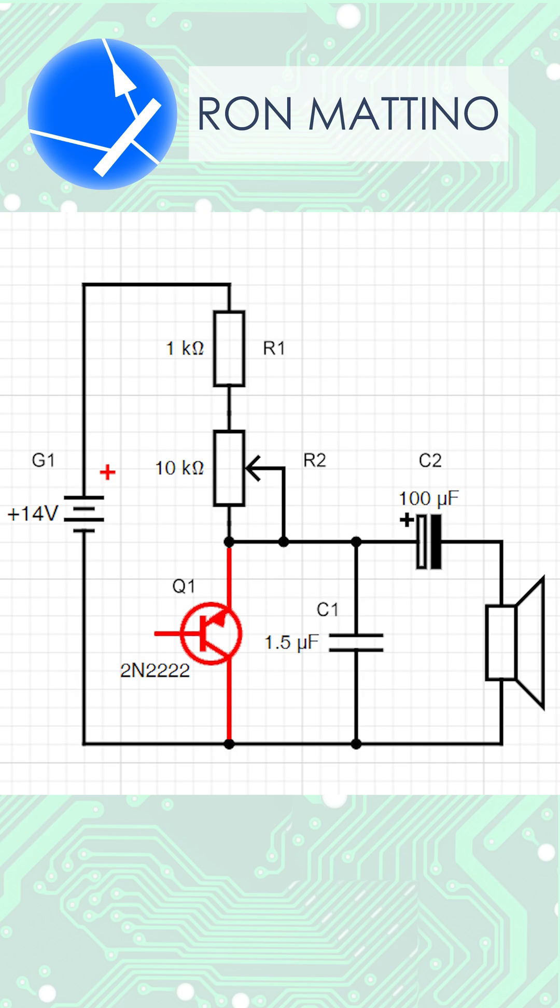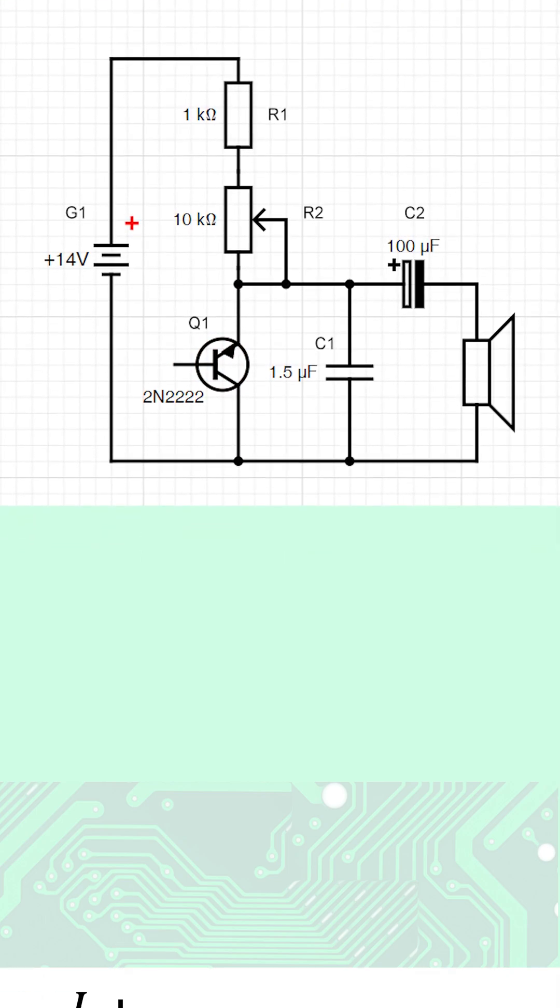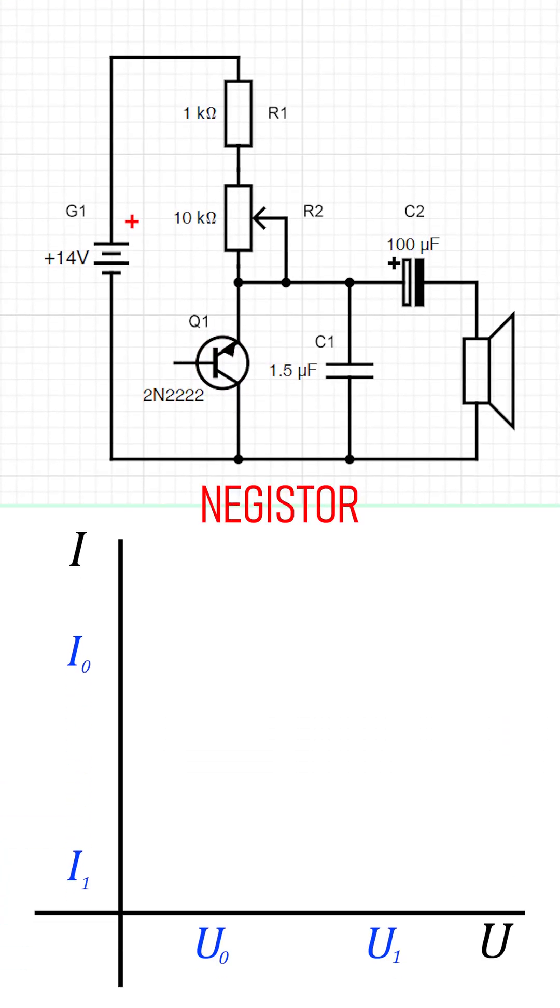This is called a negister. A negister in electronics is a component with negative resistance, which means its V-I curve contains a negative area.